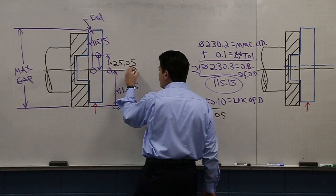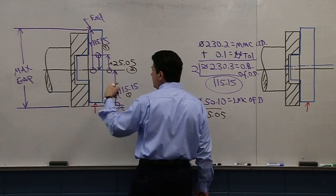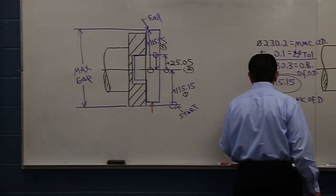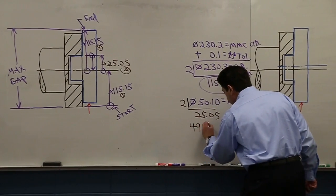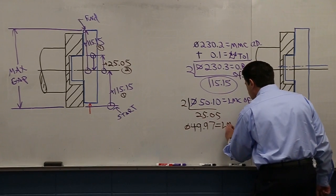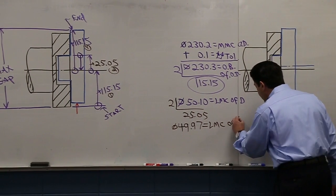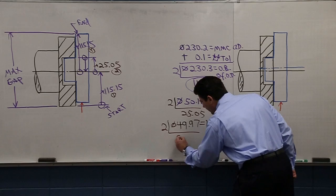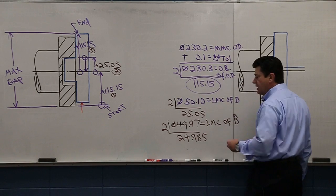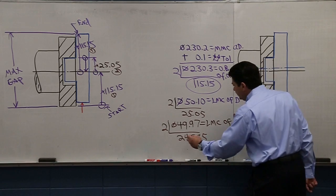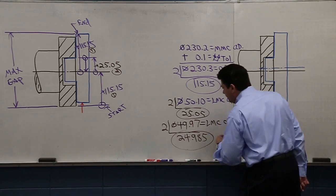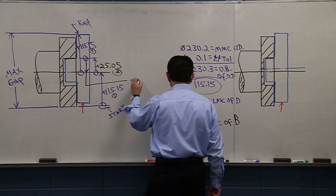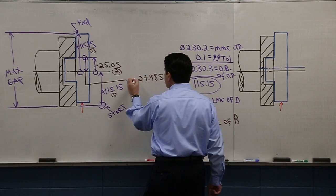Step 3 would be B. The smallest B can be is 49.97, the least material condition of B. We've already dismissed the perpendicularity control as a factor on D, so it's being dismissed on B as well. Dividing 49.97 by 2 gives 24.985. That would be Step 3, a negative 24.985.